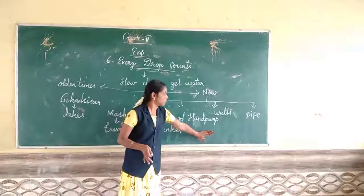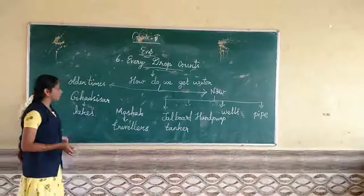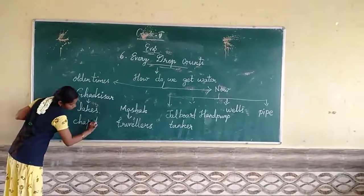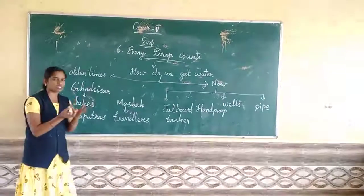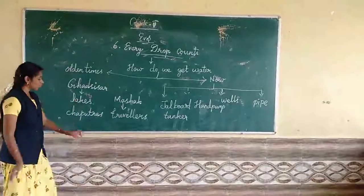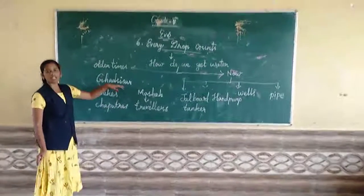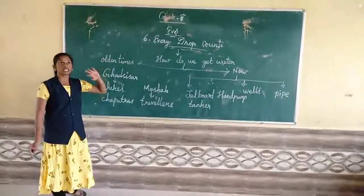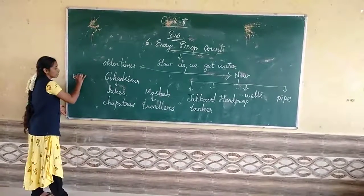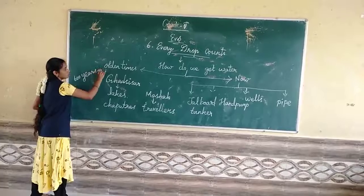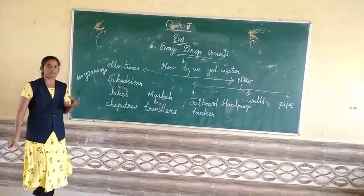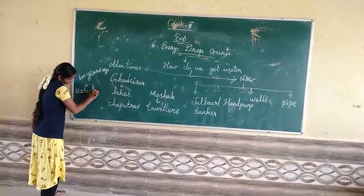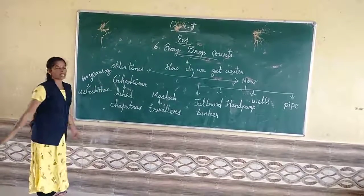This is how nowadays we are getting water. But in ancient days, we were getting water only from lakes or 'chaputras.' Chaputras means if there is a lake around the area and we get a small quantity of water, that is called a chaputra. The larger lakes are called 'gajasa.' About 600 years ago, gajasa was built — which monarch built this is discussed in the lesson.